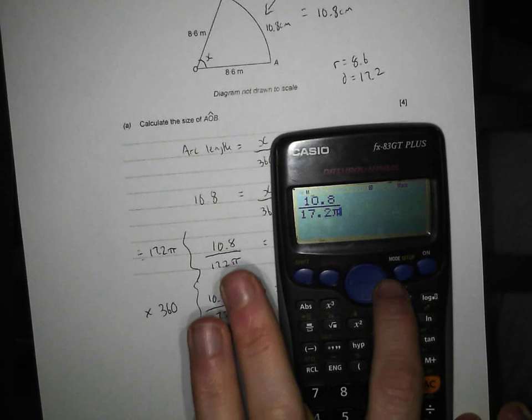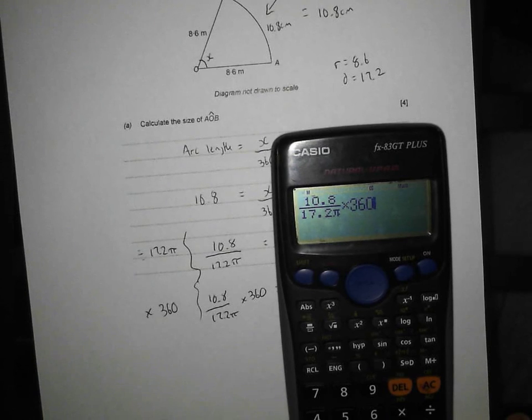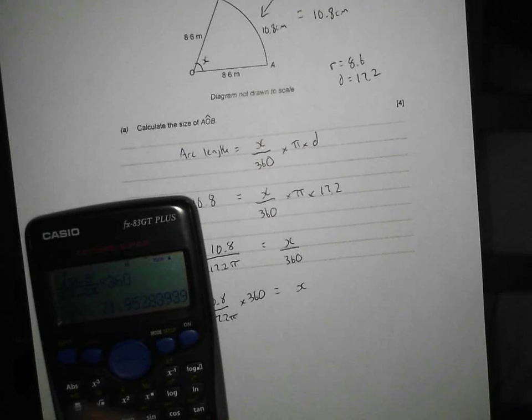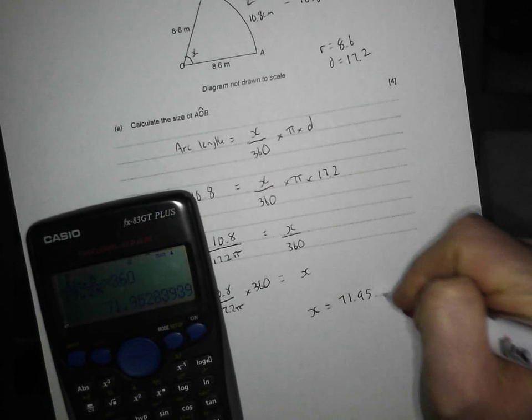Then I'm going to move to the right and I'm going to put a times by 360 degrees. Press my equals and it's come out as x equals 71.95 degrees.